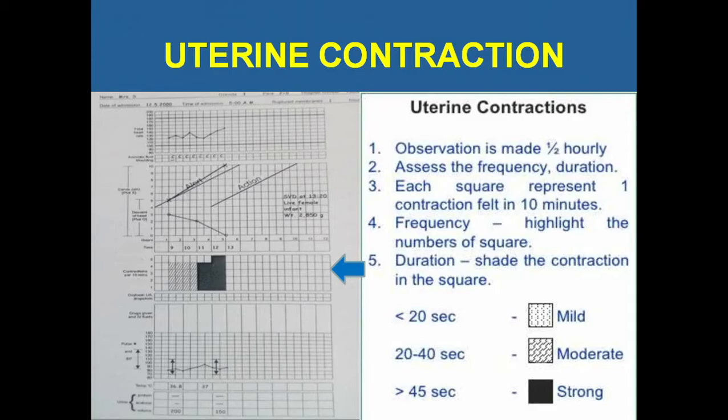Uterine contractions: observations are made every half hour. Assess frequency and duration of contractions. Each square represents one contraction felt in 10 minutes. Duration is shown by shading: less than 20 seconds is a mild contraction marked with dots, 20 to 40 seconds is a moderate contraction marked with a slanted line, and above 45 seconds is a strong contraction marked as a dark/solid line.